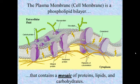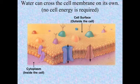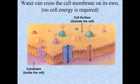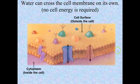The function of the cell membrane is to control what comes in and out of the cell. This is done primarily by the proteins that are embedded in the phospholipid bilayer.